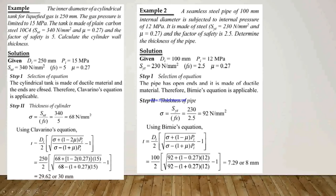First step is selection of the equation. They are giving a cylindrical tank made of ductile material with closed ends. Therefore, we use Clavarino's equation, which is applicable for ductile materials and closed ends. In the second step, we calculate the thickness of the cylinder. First, we calculate sigma: ultimate strength divided by factor of safety gives sigma equal to 340 divided by 5, which is 68 N/mm².